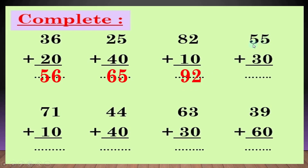another question: 55 plus 30. الـ 5 will be down. 5 plus 3: بعد 5، 6، 7، 8. يبقى الانسر طلع 85. سهلة جدا! another question: 71 plus 10. الـ 1 will be down. 7 plus 1 equal 8. يبقى الانسر طلع 81.